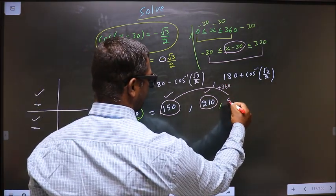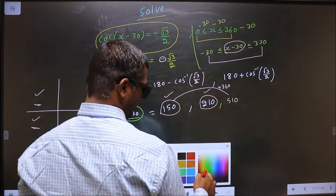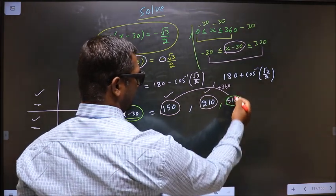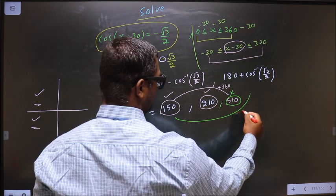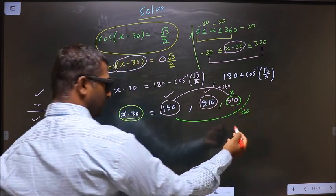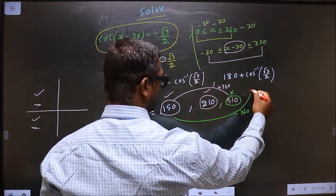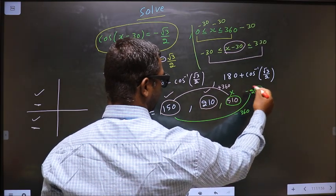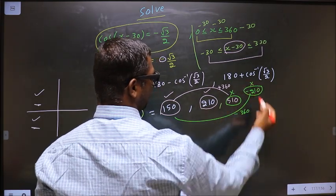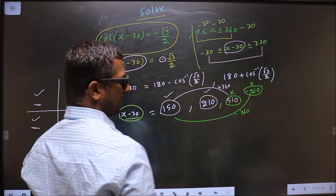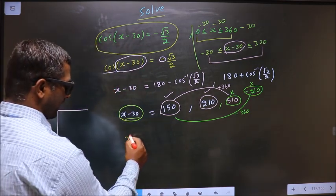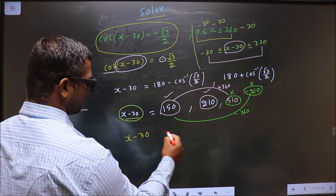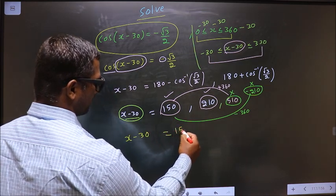So I get 510. This does not lie in the interval, rejected. Even if I subtract 360, I get -210. Even this also does not lie in the interval, so you reject it. Values we got for x - 30 are 150 and 210.